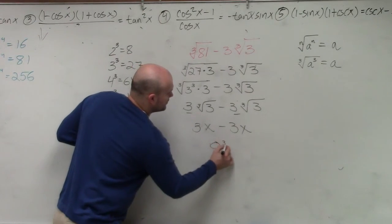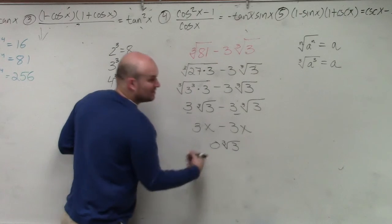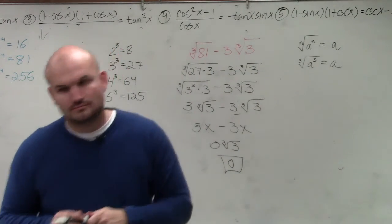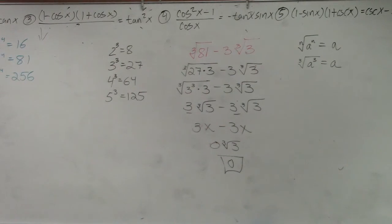0. So you have 0 cube root of 3. What's 0 times cube root of 3? 0. Done. That's your answer.